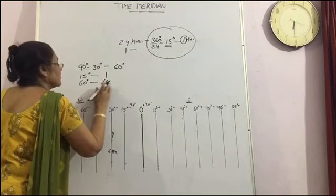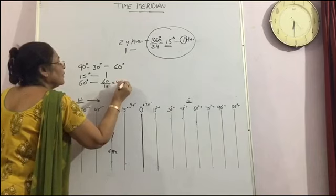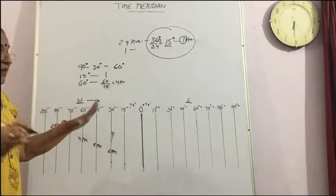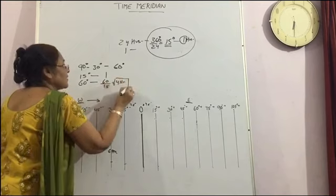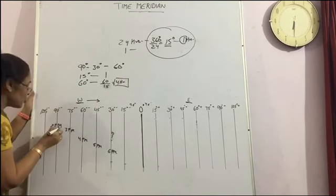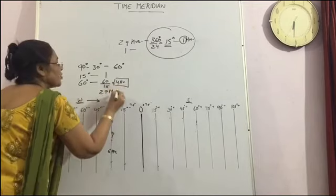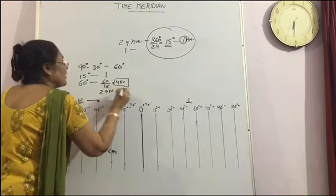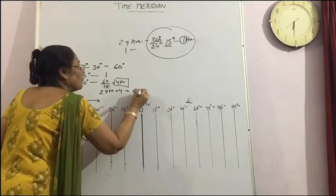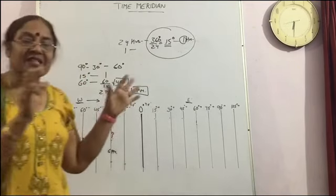And the 1 degree will cover in 60 upon 15. Oh sorry. 60 upon 15 is equal to 4 hour. So it means 4 hour is the answer. And if the time on the 90 degree west is 2 pm. And the answer is 2 plus 4. 2 plus 4 is 6 pm. Again we will get the same answer. This is the second way.